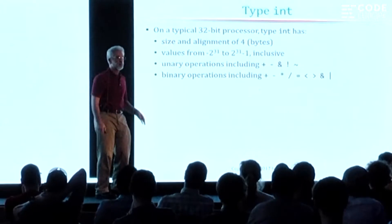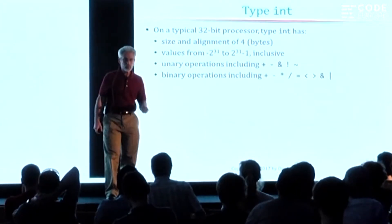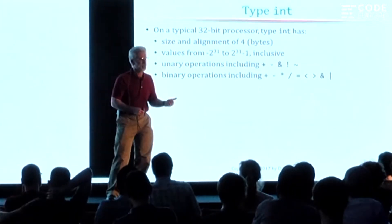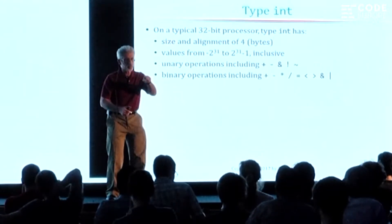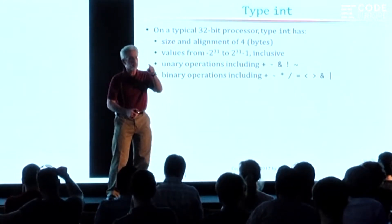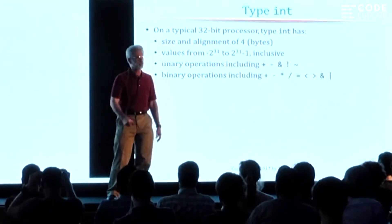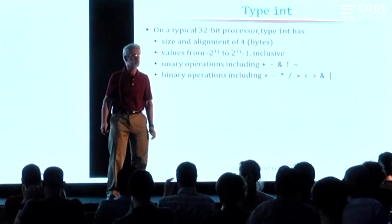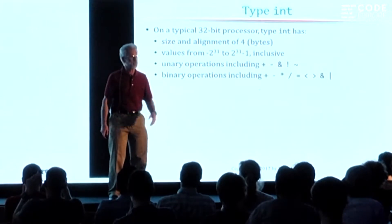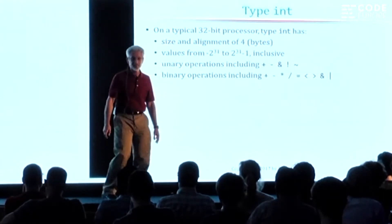That's true of any number of other examples — like with floating point arithmetic, you can do add, subtract, multiply, and divide, but you cannot use the percent operator, which is modular divide. What does it mean to do a modular divide of a float? The people who designed C and C++ didn't know either, so you can't do it.